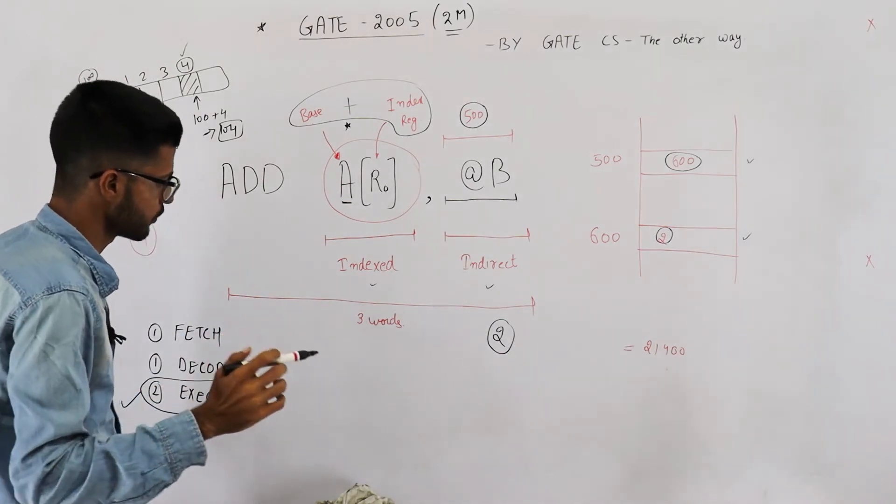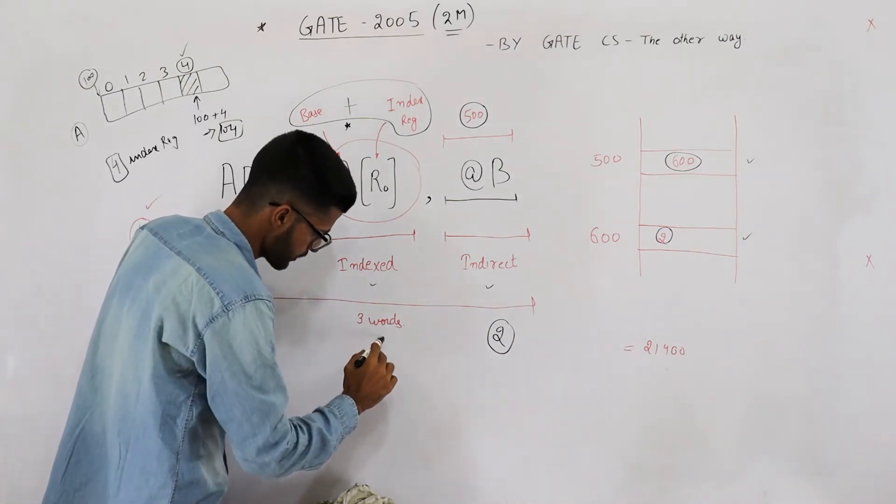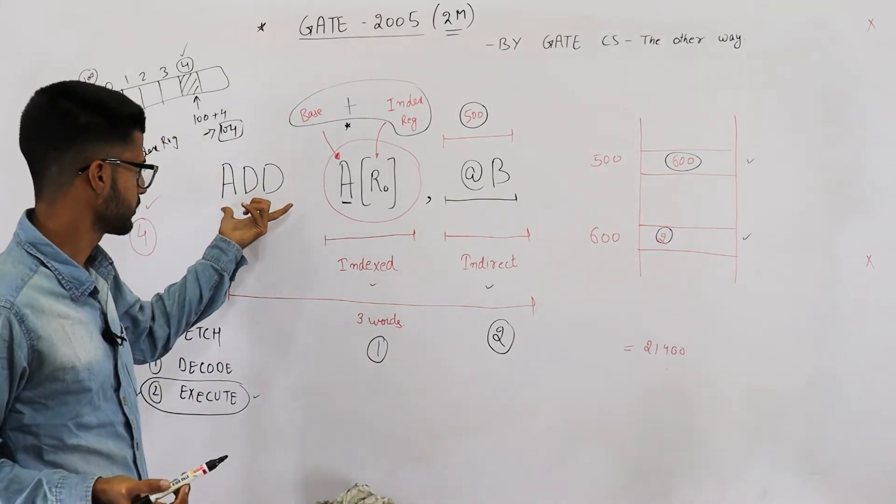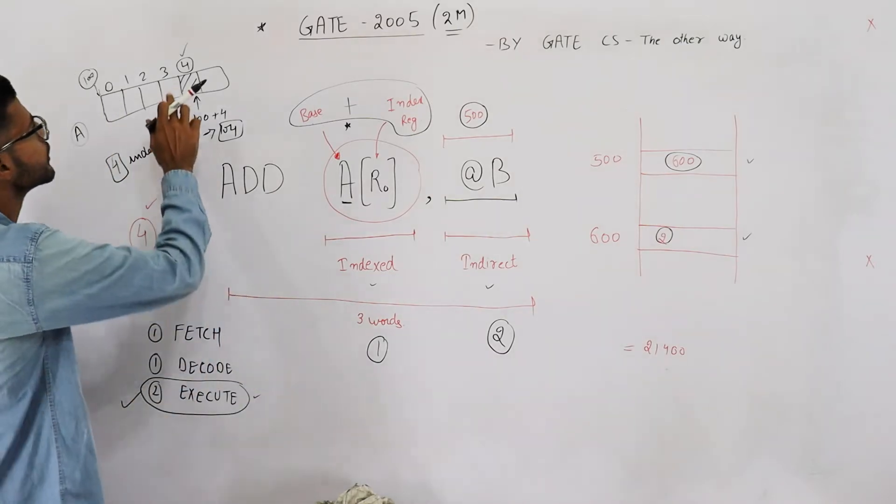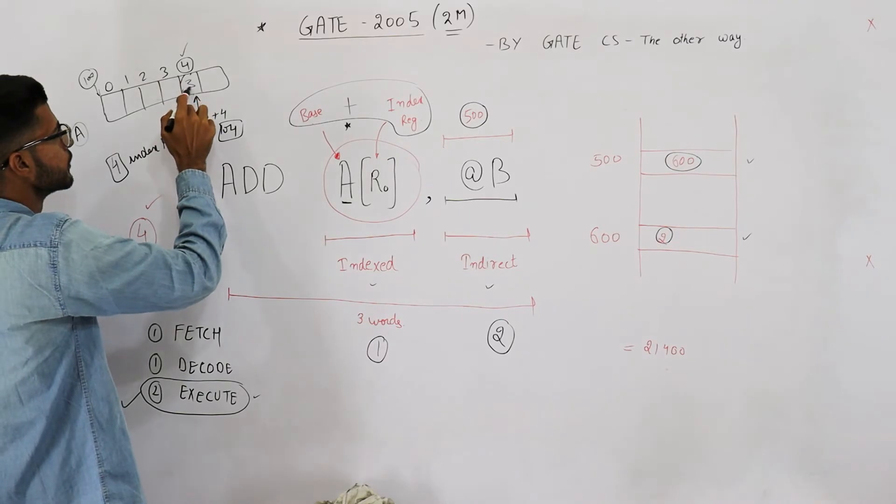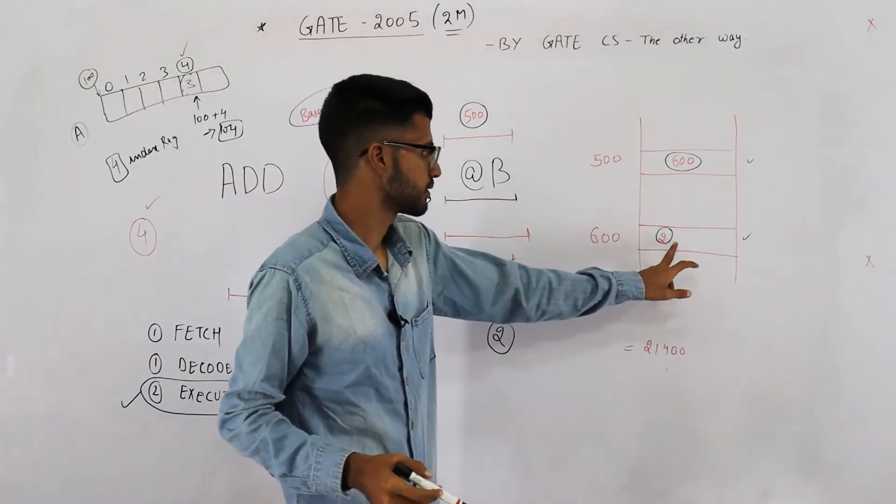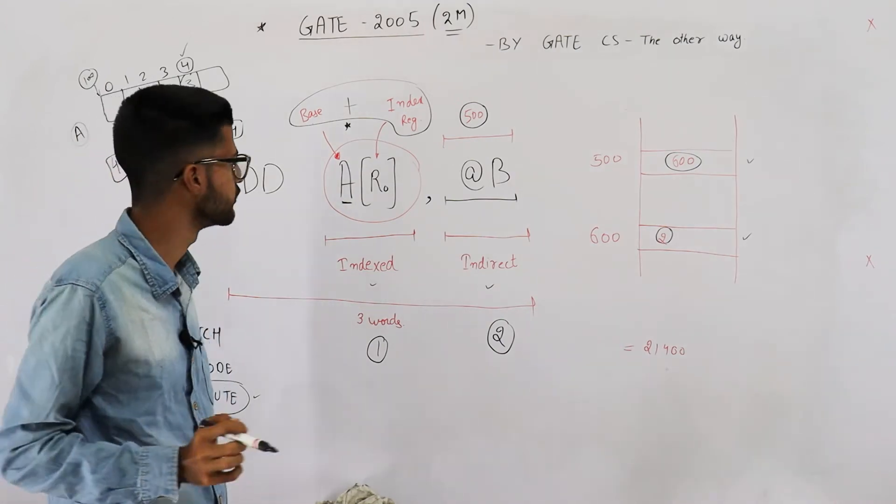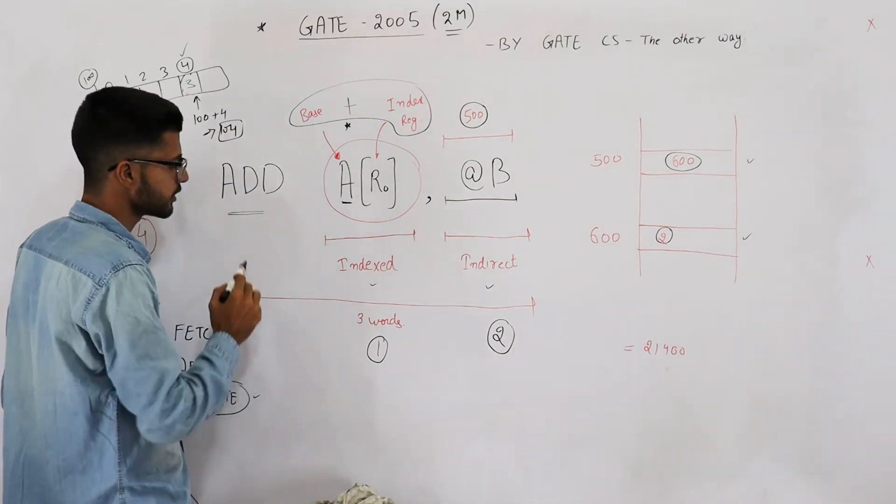Okay, so one memory read is required for this one. After that you will perform the addition. Say here it was saved 3, this operand is 2, this operand is 3. You add both of them and get 5. This addition is performed.